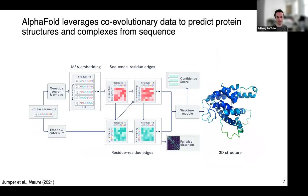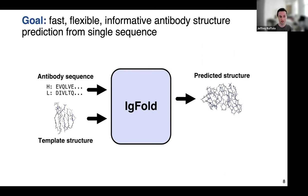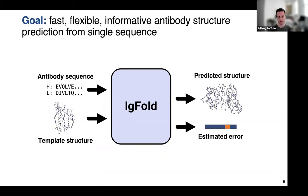AlphaFold has revolutionized protein structure prediction by taking co-evolutionary information in the form of multiple sequence alignments and mapping that through a neural network into a 3D structure. Our goal with IGFold is to take the antibody sequence and predict the structure in an end-to-end fashion. We want to predict antibody structures quickly, since previous approaches and AlphaFold tend to be slow and hard to apply to large antibody datasets. We also want to incorporate template information if available, and have the model estimate its own error so we know if predictions are likely to be accurate.